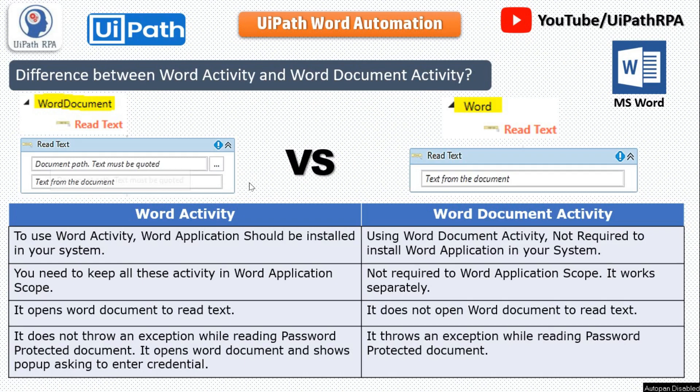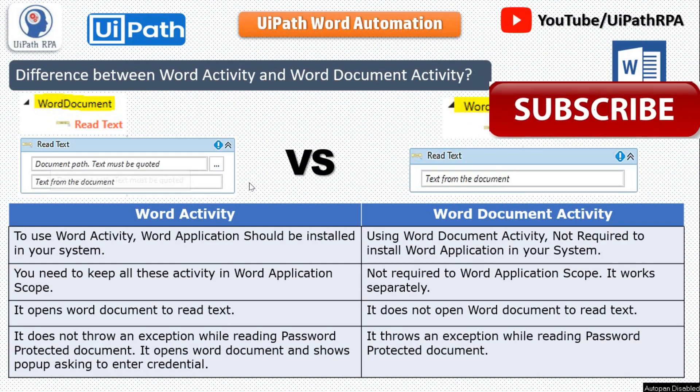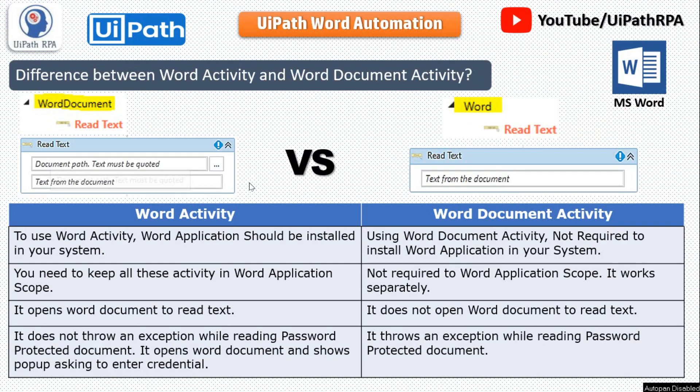The second difference: in Word Activity, you need to keep all activities inside a Word Application Scope activity, same as Excel Application Scope. In Word Document Activity, it is not required — it works separately. The third difference: Word Activity opens the Word document to read text, but Word Document Activity does not open the Word document to read the text.